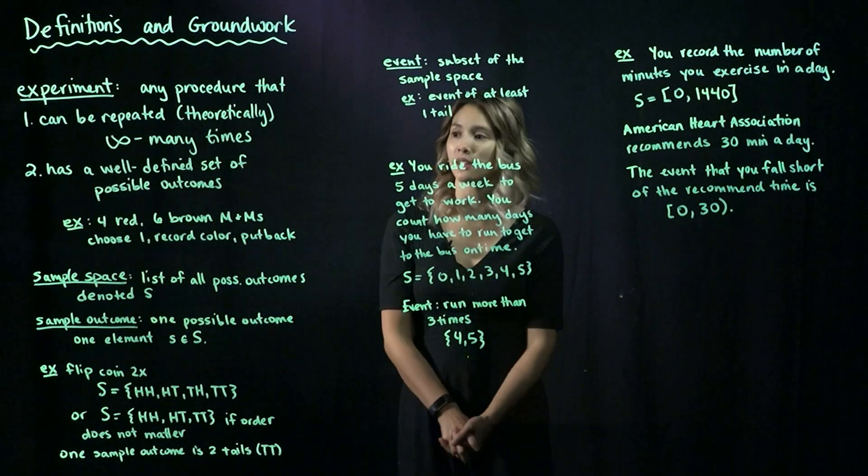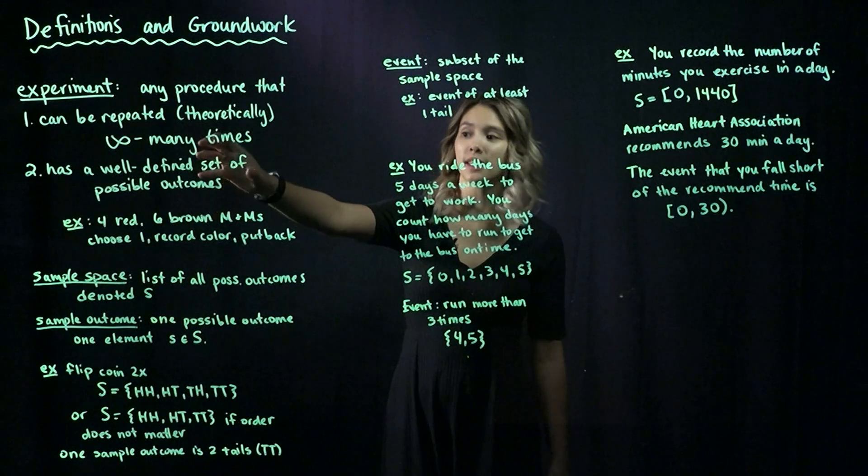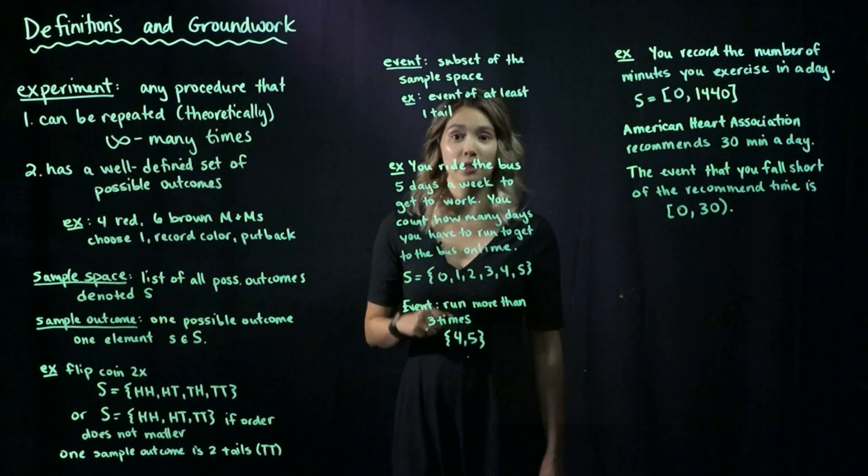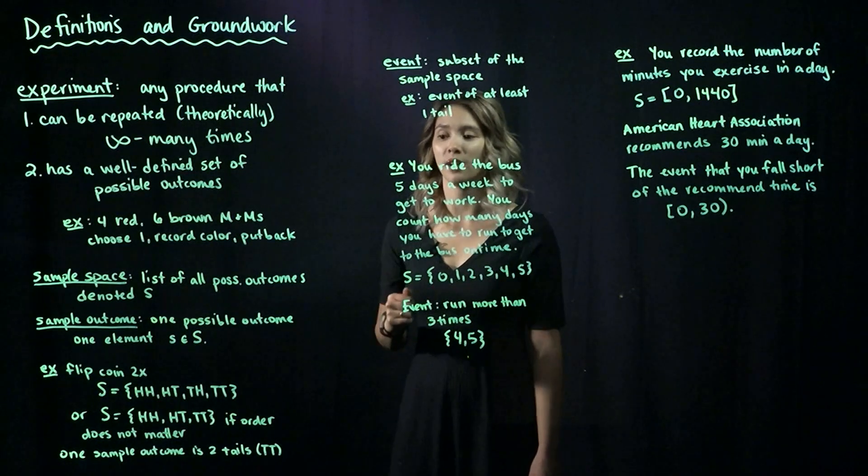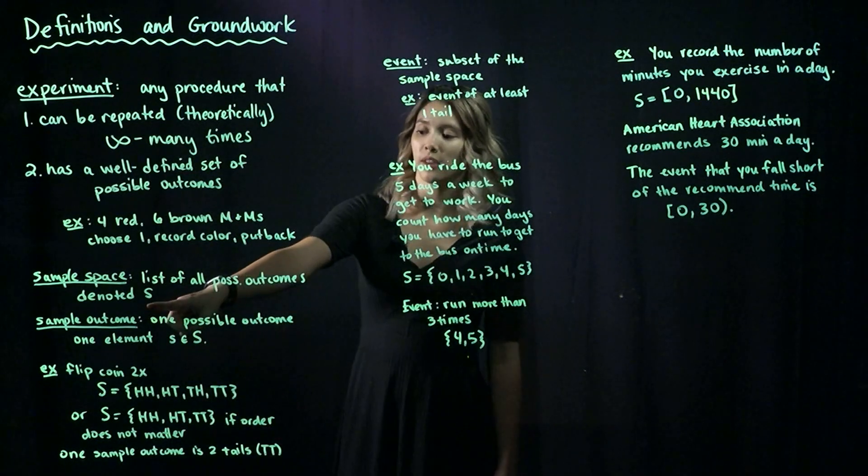Now we can move on to the sample space. We touched on this well-defined set of possible outcomes. Let's give that a name. That name is going to be the sample space. So the sample space is the set of all possible outcomes, and we will denote this usually with a capital S.